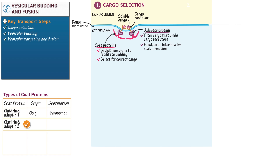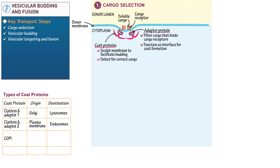Write that clathrin proteins paired with adaptin-2 originate in the plasma membrane and are involved in vesicular transport to endosomes. Now indicate that COP1 proteins originate in the cis-Golgi and are involved in transport to the ER. Write that they also facilitate transport from later cisternal stacks in the Golgi to earlier ones. Finally, indicate that COP2 proteins originate in the ER and facilitate transport to the cis-Golgi.